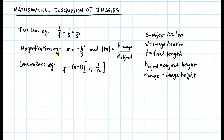The magnification equation is m equals minus the image distance over the object distance. The magnitude of this tells us the ratio of the image height to the height of the object. Finally, there is the lens maker equation: 1 over the focal length equals n minus 1, where we assume light starts in air and goes to an index of refraction n, times the quantity 1 over r1 minus 1 over r2, where r1 and r2 are the radii of curvature of the lens.